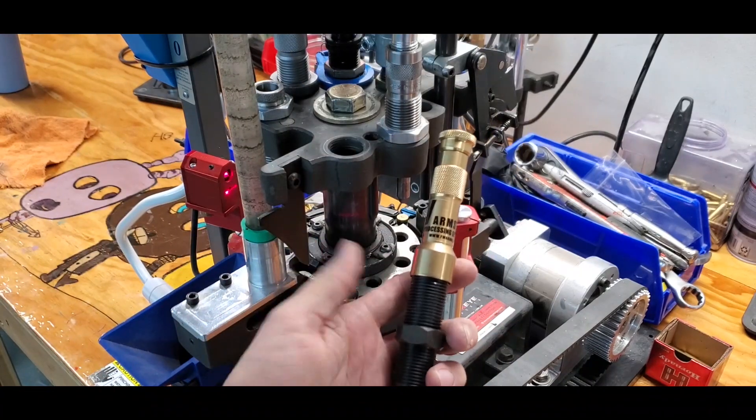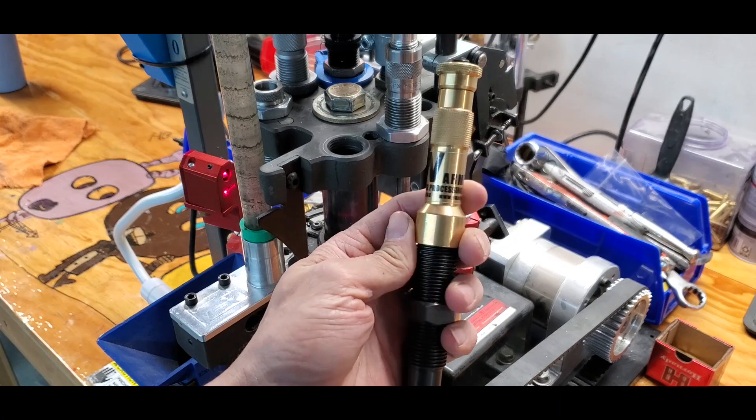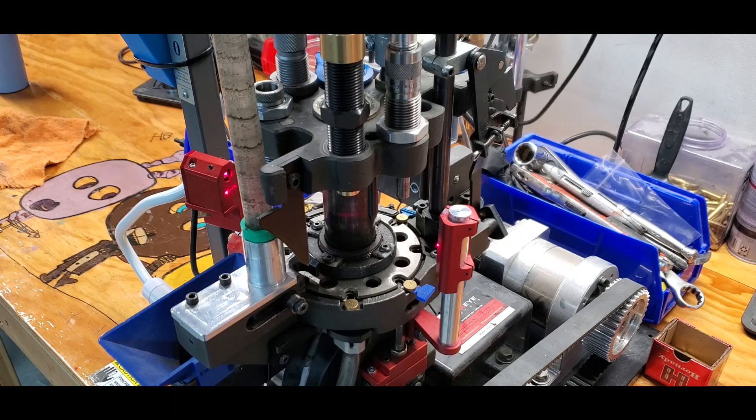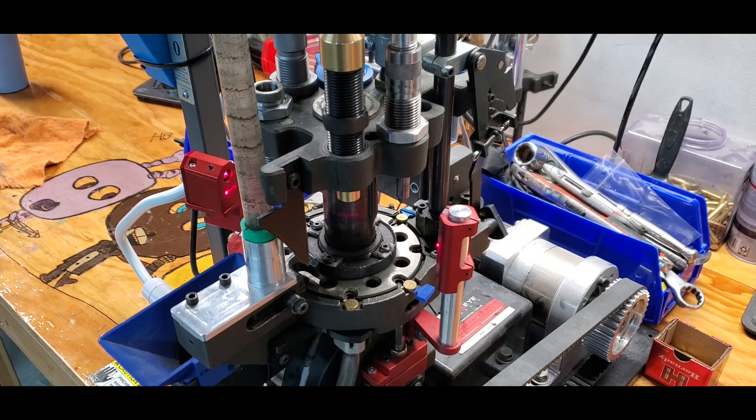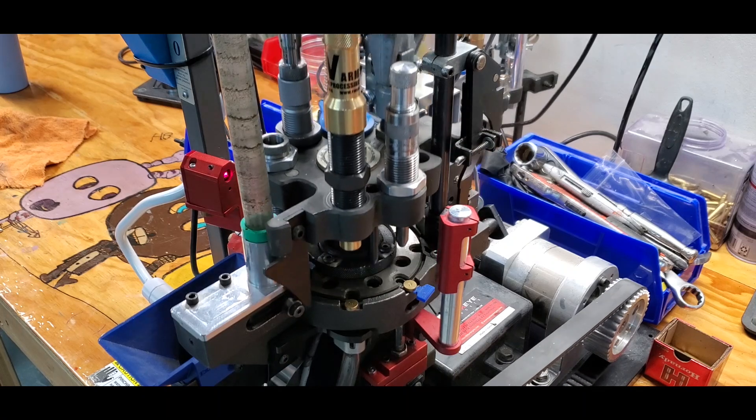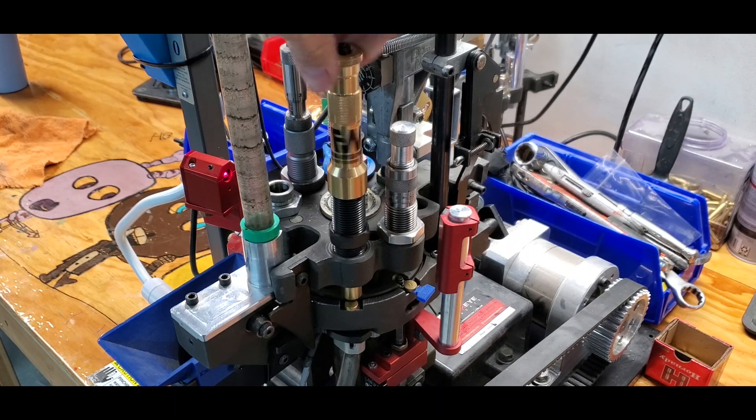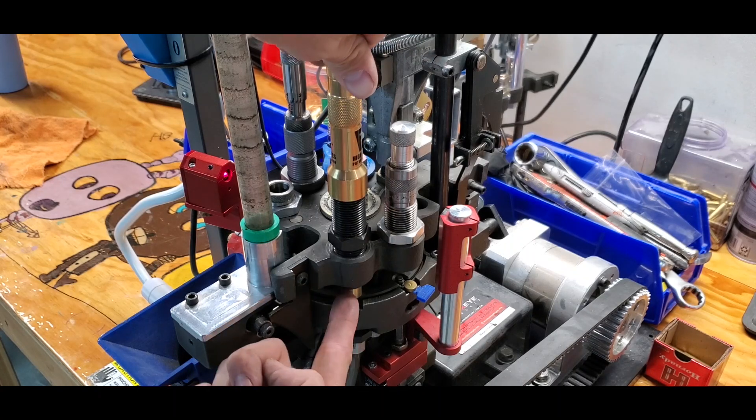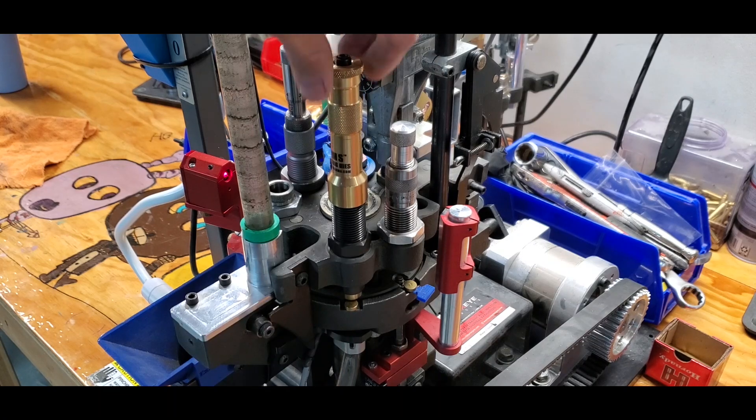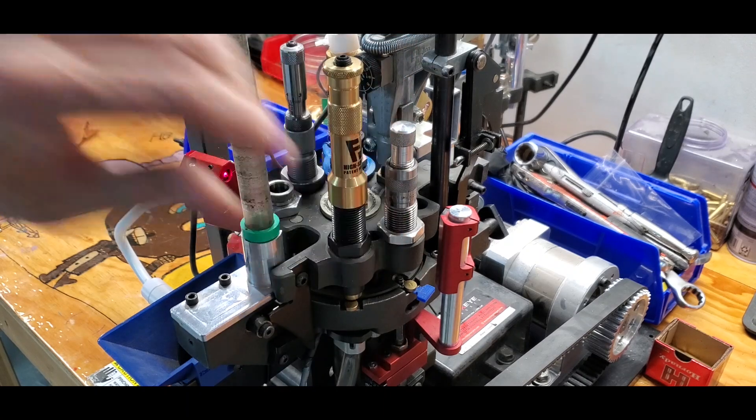Okay, here is the FW Arms high speed processing decapping die. The first thing I'm going to do is I'm going to run the 1050 to the bottom of the stroke. I'm going to run this down. Just watch the guide bushing here. I'm going to run that down to about right there just to get started.